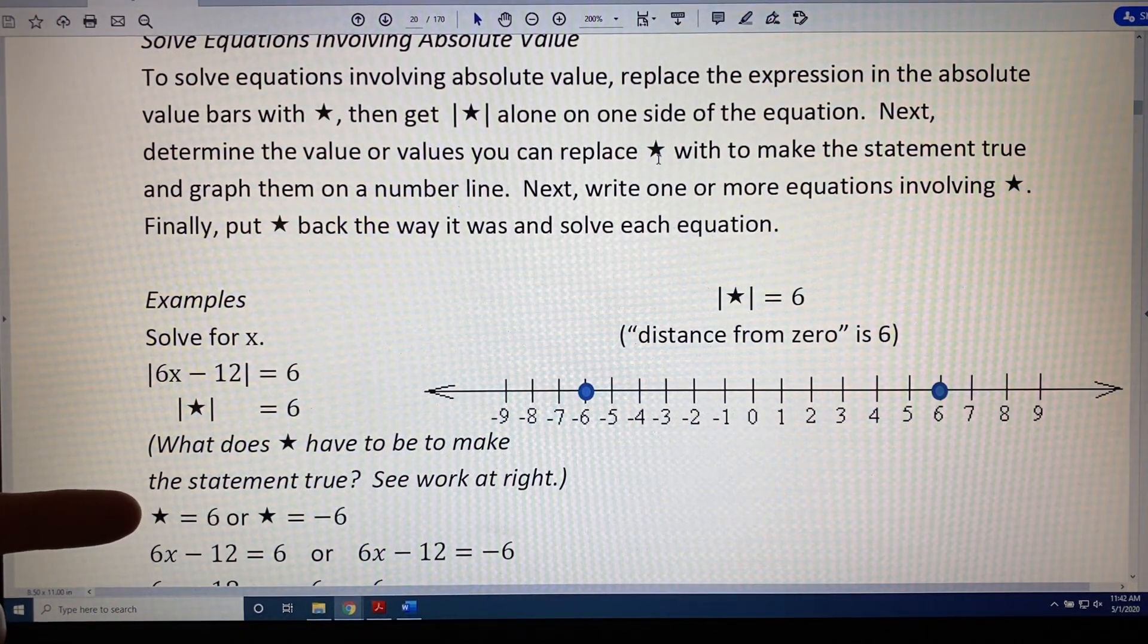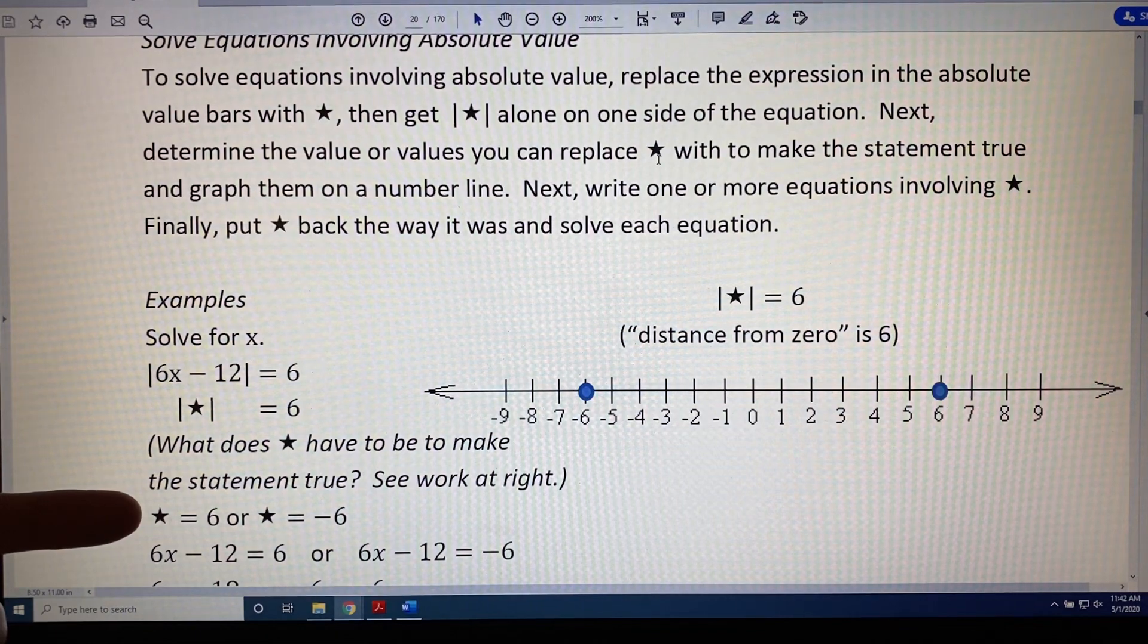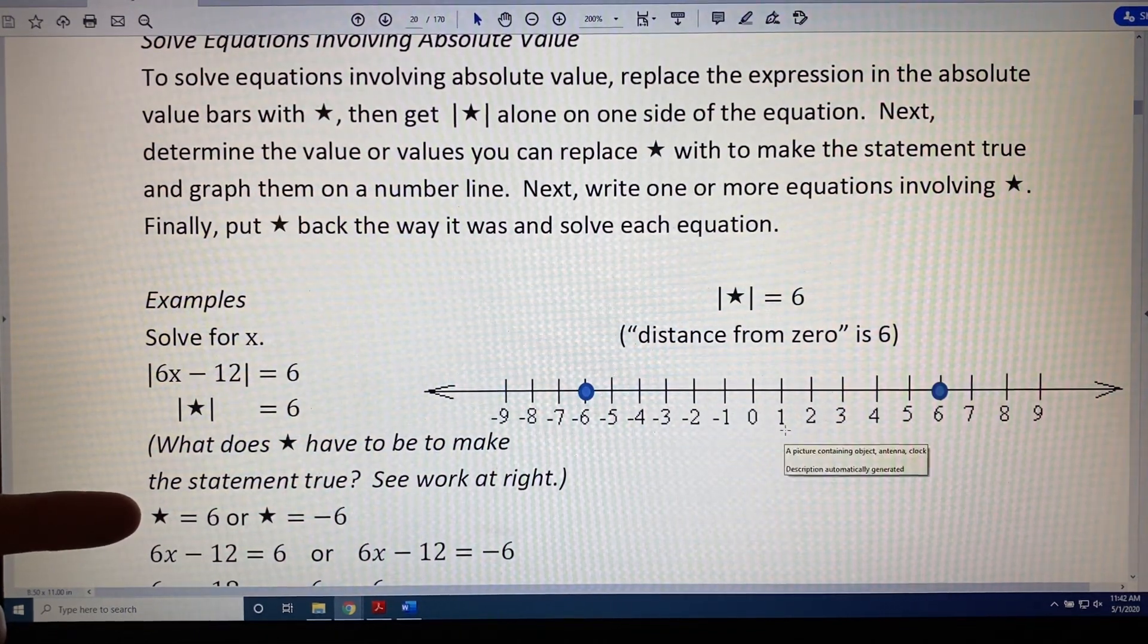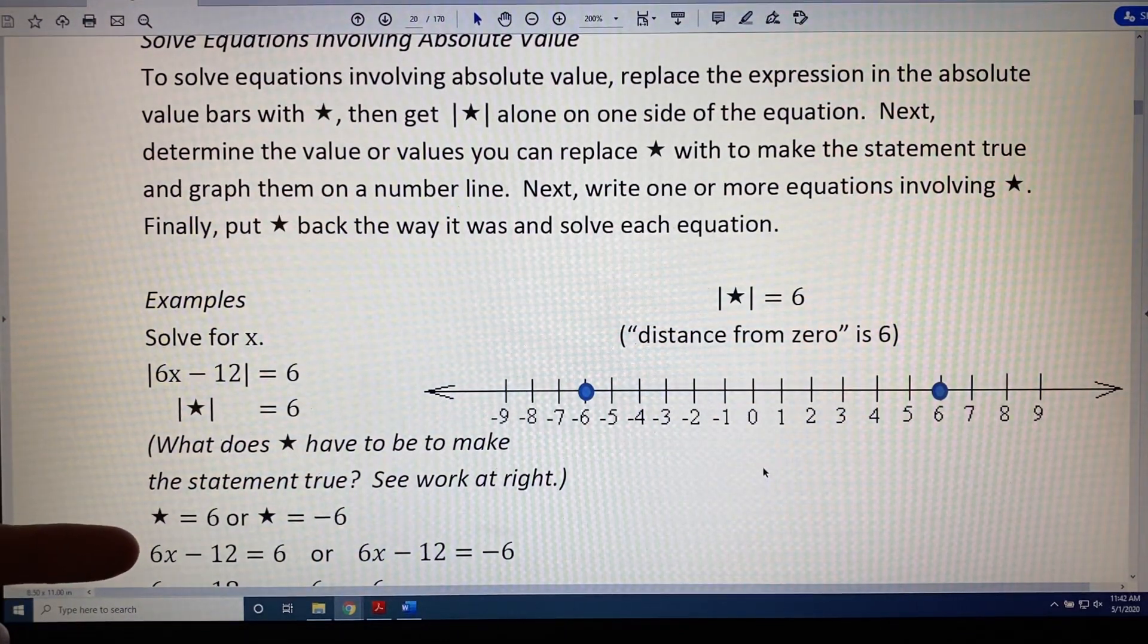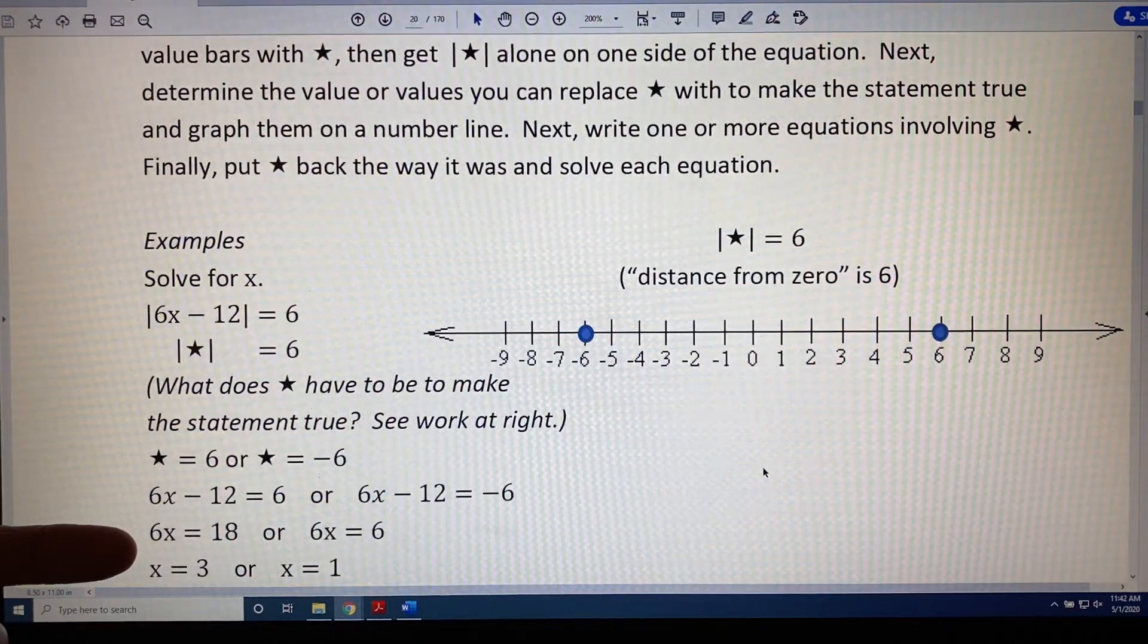Now, star is the thing inside the absolute value bars. So we'll replace the star in both these equations with 6x minus 12. This tells us that 6x minus 12 equals 6 or 6x minus 12 equals negative 6.